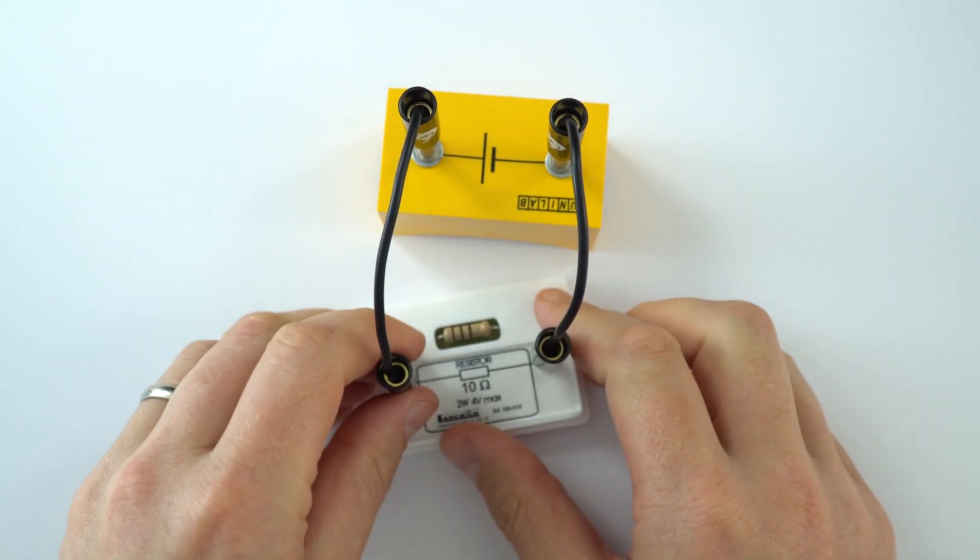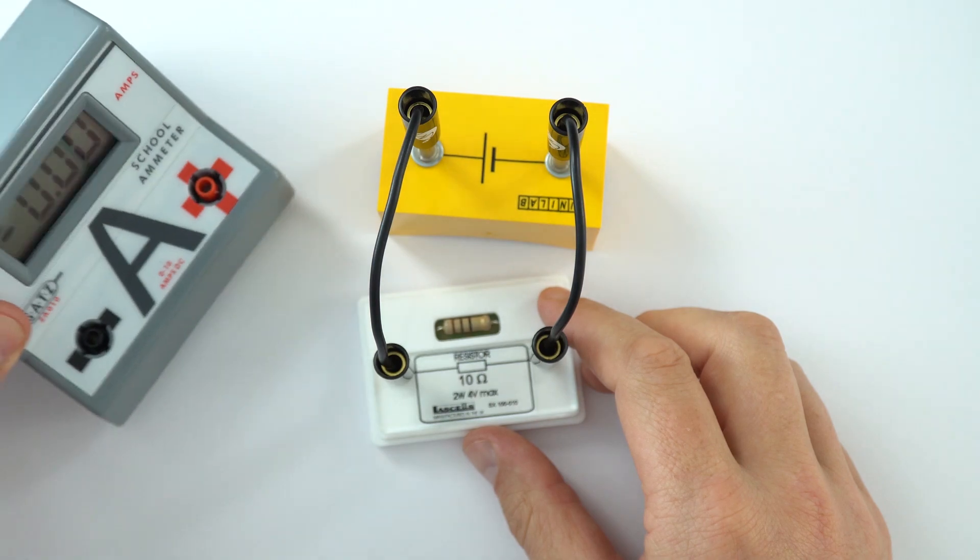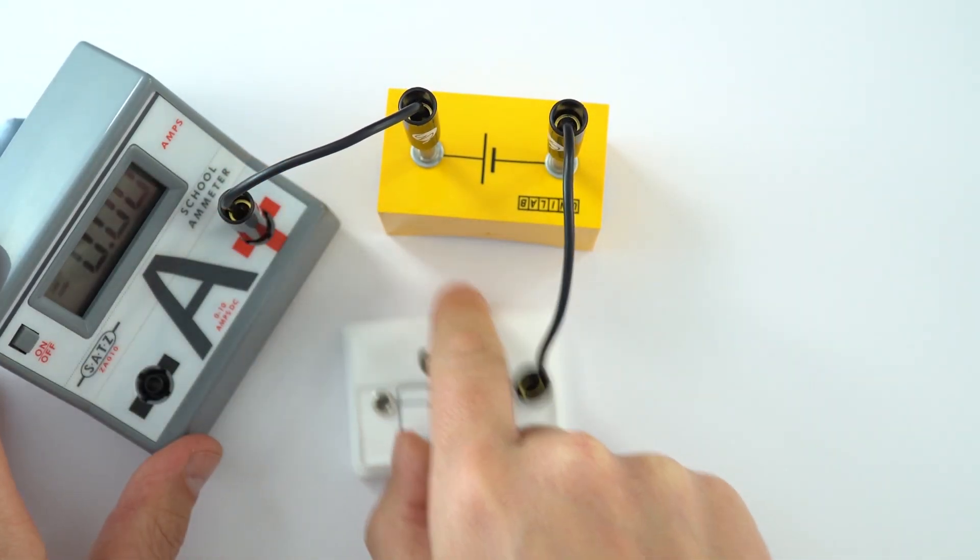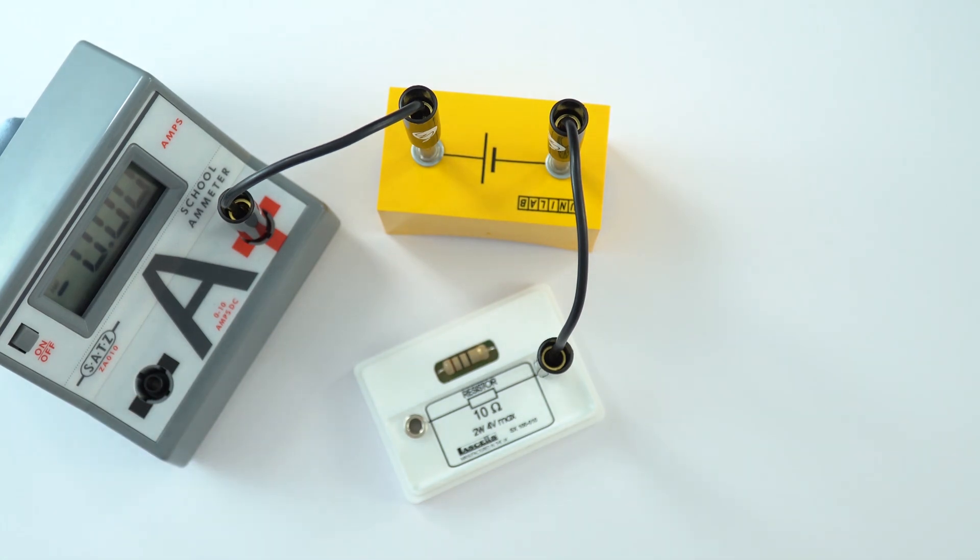So the way we measure it is by using something to measure the amps, and that is an ammeter. Now the important thing is that the ammeter always goes in series with the other components.